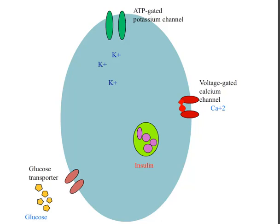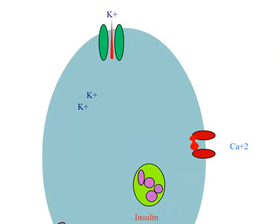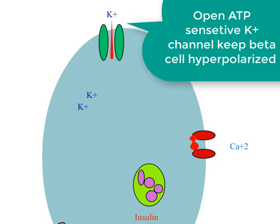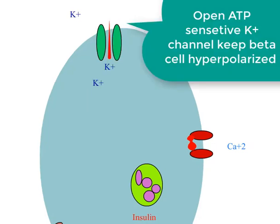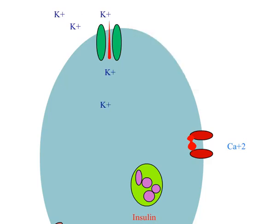The vesicles consist of two atoms of zinc and six molecules of insulin. In the resting cell with normal or low ATP levels, potassium diffuses down its concentration gradient through ATP-gated potassium channels, maintaining the intracellular potential at a fully polarized, negative level.